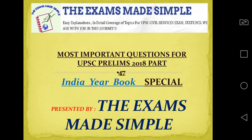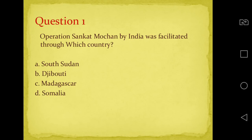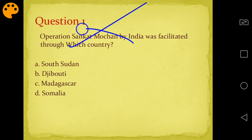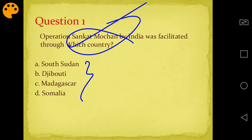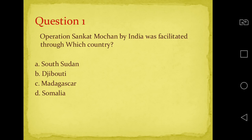Let's start with part 47. Some of the questions are from India Yearbook. First question: Operation Sankat Mochan is facilitated by India with which country? Options are South Sudan, Djibouti, Madagascar, Somalia. Pause the video, think of the answer. The correct answer is A - South Sudan.